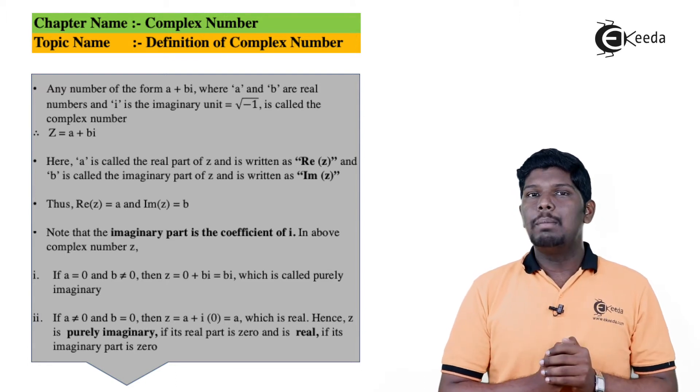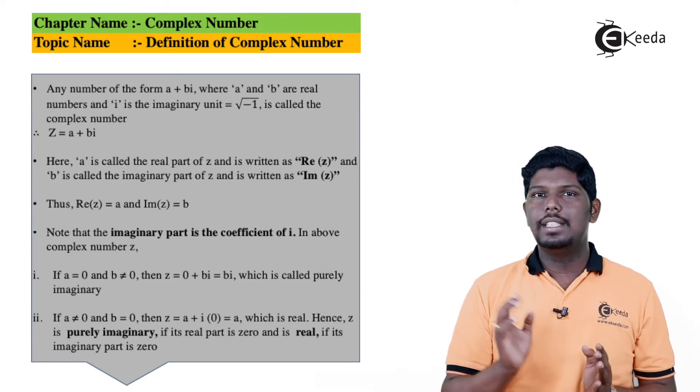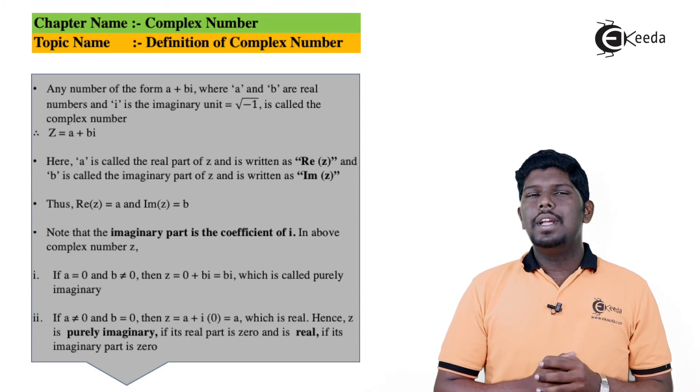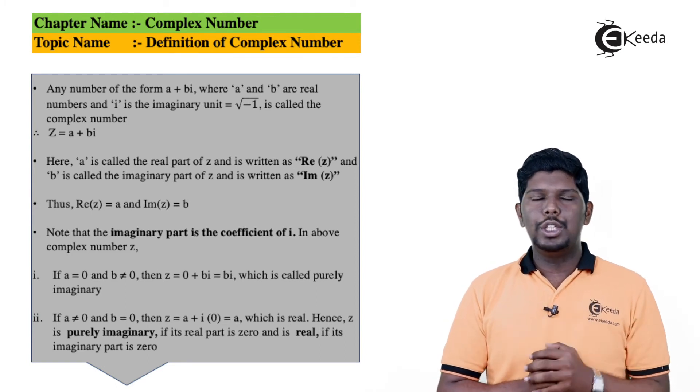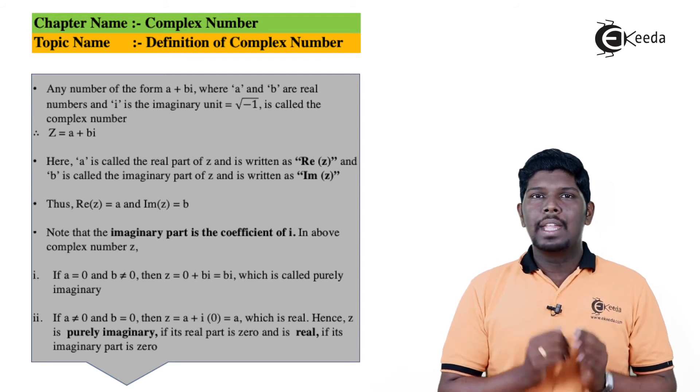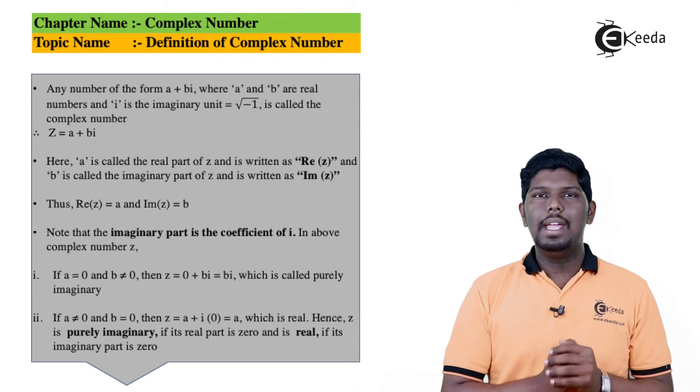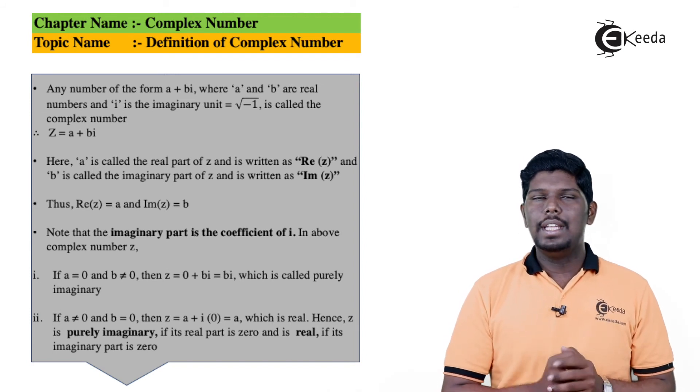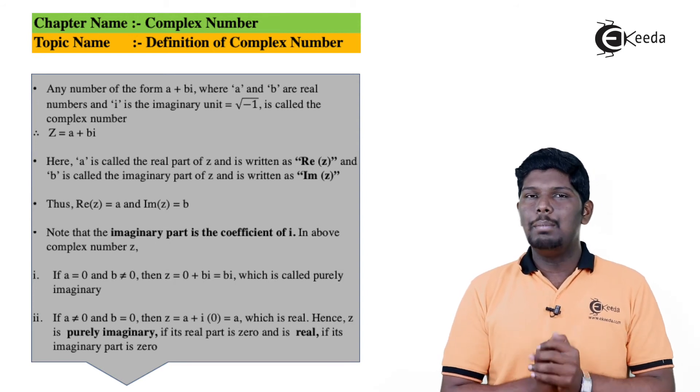The thing we should remember is that both a and b will be real, but a is called the real part while b is called the imaginary part. If we consider a complex number a + bi and a = 0, then such complex number will be purely imaginary. For a complex number, if the value of b is zero, then the imaginary part will be eliminated and that complex number will be purely real.